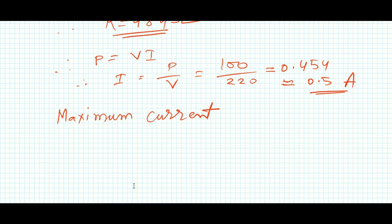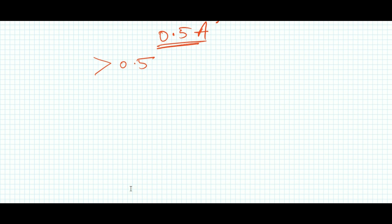That means the maximum current that can flow through the filament is equal to 0.5 ampere. So this is also the safe current. If we pass current more than 0.5 ampere, the bulb gets fused—the filament of the bulb gets melted.